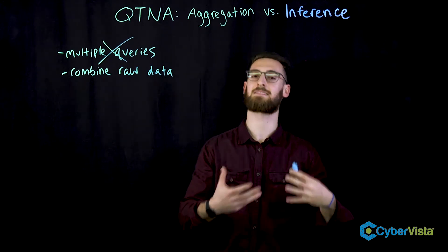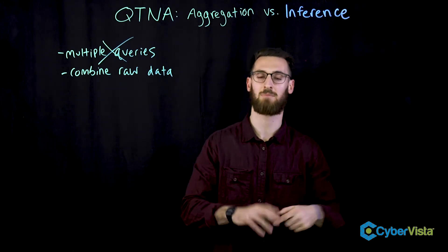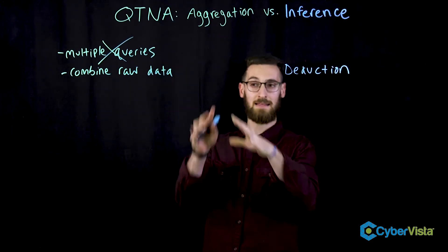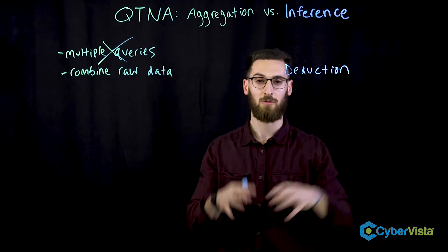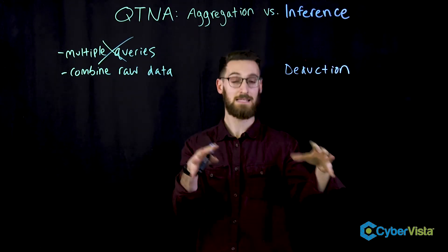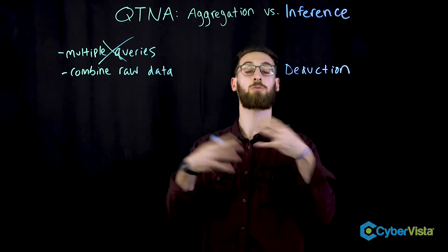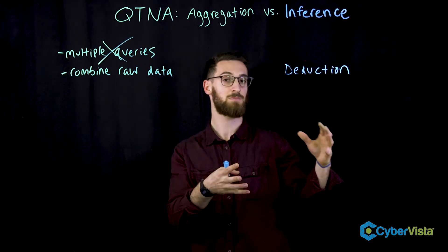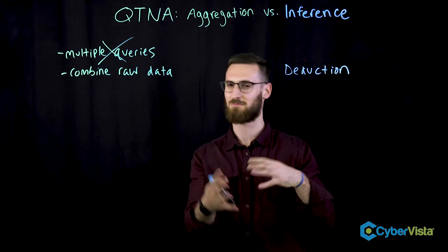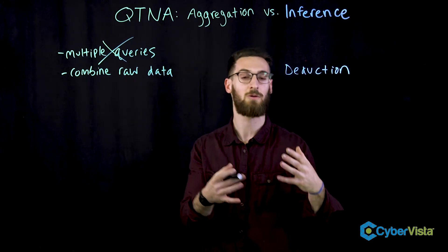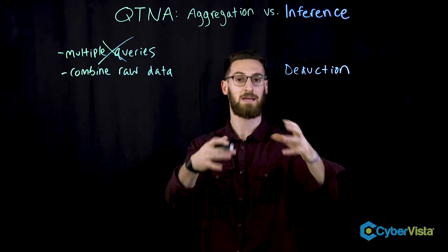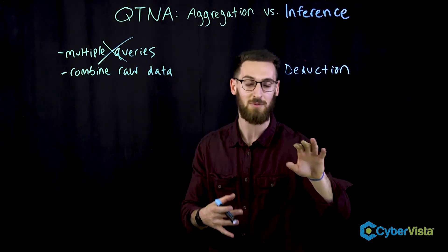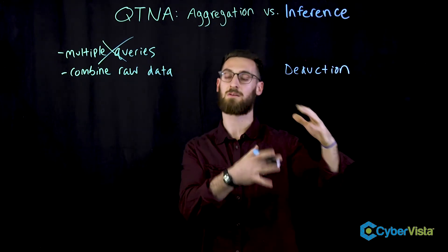So how does this process compare with inference? Well, in inference, it takes an extra step — something called deduction. Remember in aggregation, when we had those puzzle pieces and they came together and formed a very clear picture? Well in inference, those puzzle pieces came together but the picture wasn't very clear. We had to guess or deduce. We had to do this extra step to learn something sensitive.